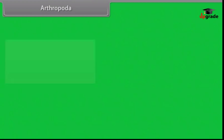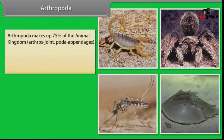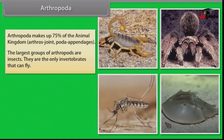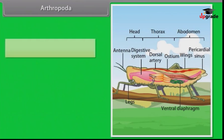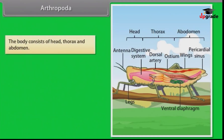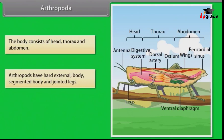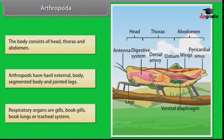Arthropoda makes up 75% of the animal kingdom. 'Arthros' means joint and 'poda' means appendages. The largest group of arthropods are insects — the only invertebrates that can fly. They have organ system level of organization, are bilaterally symmetrical, triploblastic, segmented and coelomates. The body consists of head, thorax and abdomen. Arthropods have a hard external body, segmented body and jointed legs. Respiratory organs are gills, book gills, book lungs or tracheal system.